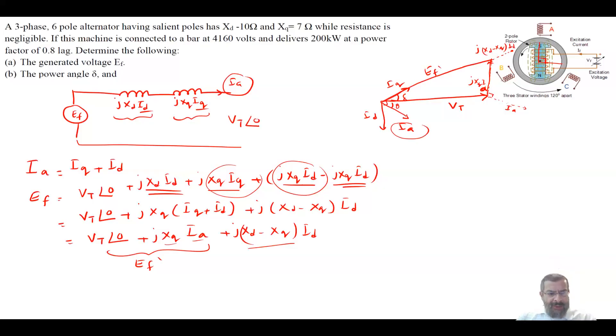So the first thing I want to find is your IA and your IA is straightforward. It's equal to 200×10³ which is your P divided by √3 times 4.16×10³ because this is 4.16 kilovolt times 0.8 angle of minus cos⁻¹(0.8), and this will give me a total current equal to 34.7∠-36.9°. So that is my IA.